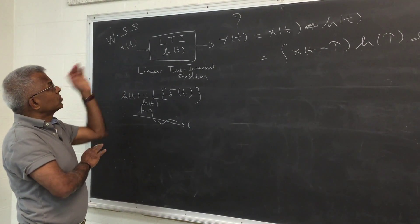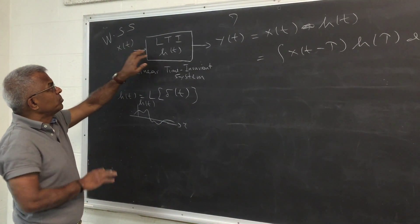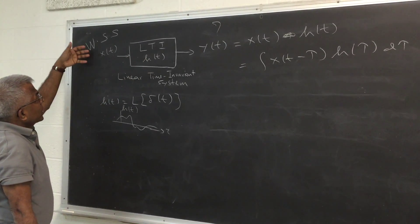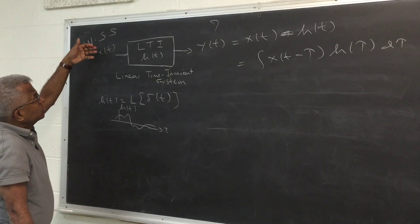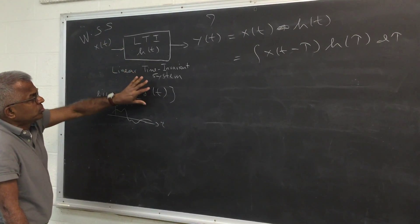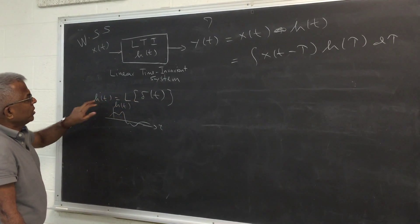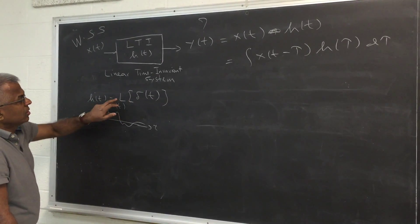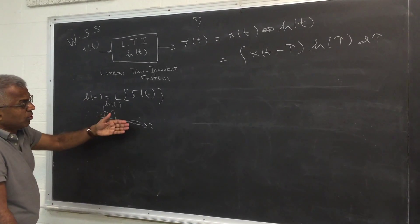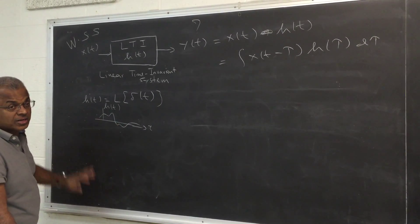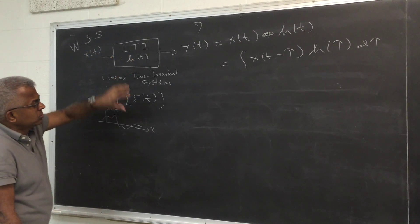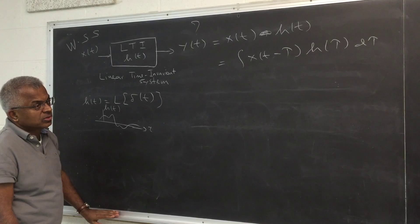Let's look at a stochastic process being applied to a linear time invariant system. A stochastic process is a collection of waveforms. A linear time invariant system is characterized by its response to an impulse. The impulse response of the system is generally denoted by h(t) — it characterizes the system. So you hit it with an impulse, and what comes out is the impulse response.